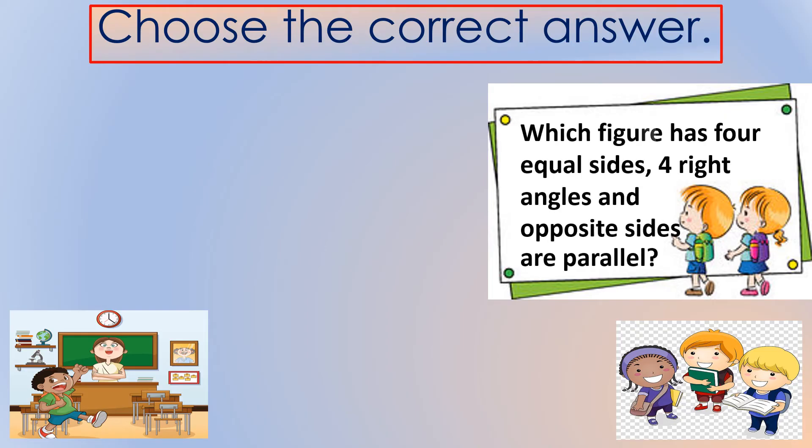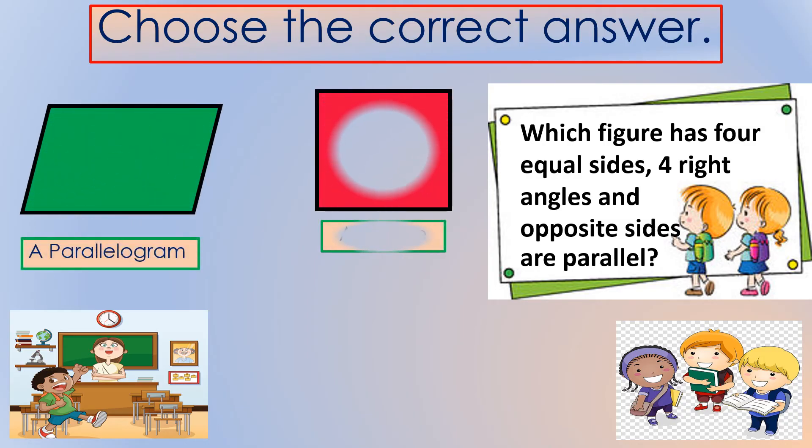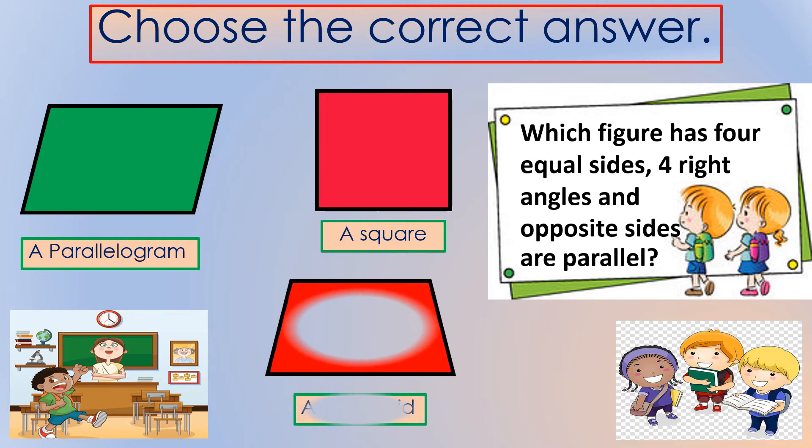Which figure has four equal sides, four right angles, and opposite sides are parallel? Your choices. Is it a parallelogram? A square? Or a trapezoid? Correct answer is a square.